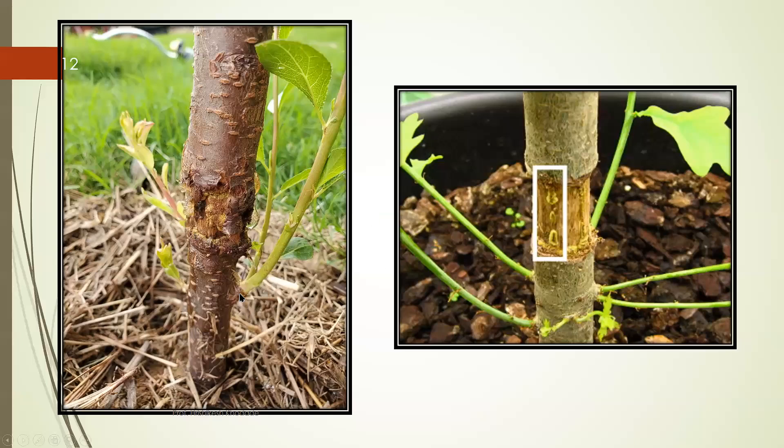So these are real-time photographs. This photograph shows that after girdling experiment the phloem is removed in this region. Resulted into the accumulation of food material in this area. This is freshly done experiment and this photograph is taken after one month of the experiment.